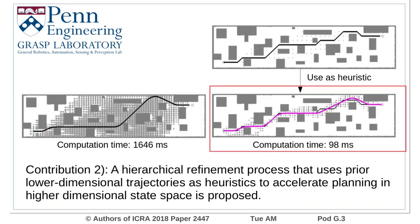We also propose a hierarchical refinement process that uses a trajectory in lower-dimensional state space as heuristics to accelerate planning in higher-dimensional state space.